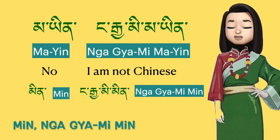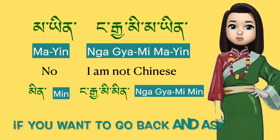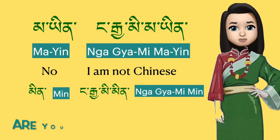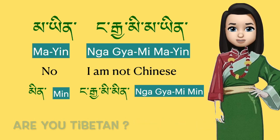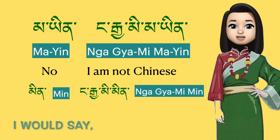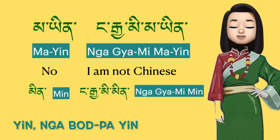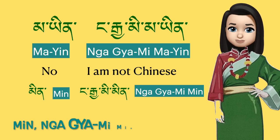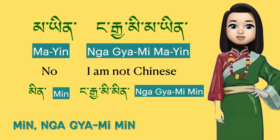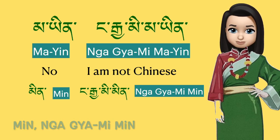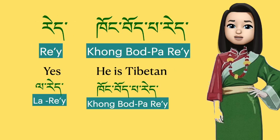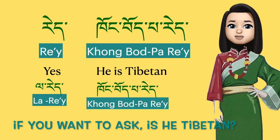The sentence 'No, I'm not Chinese' is translated as 'ma yin', or you could say 'min'. Going back — if you ask 'Are you Tibetan?', then I will say 'yin', 'nga purpa yin'. And 'No, I'm not Chinese' would be 'ma yin' or 'min'.